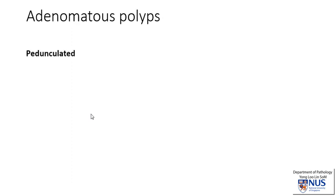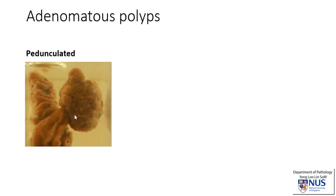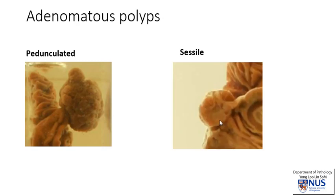In terms of gross appearance or morphology, there are two types of adenomatous polyps. There are the pedunculated ones, which have a stalk, and the sessile polyps, which do not have a stalk. This is actually a cut section, and you can see that the polyp is directly in contact with the rest of the mucosa.